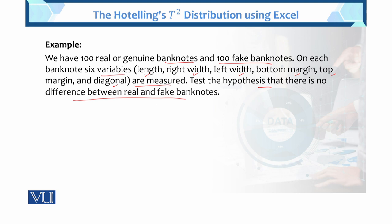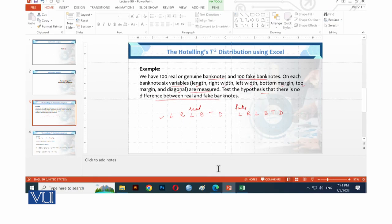The data has 100 real notes and 100 fake notes, totaling 201 rows including the header row. In the multivariate case, real notes form one group and fake notes the other. Each note is checked on six variables: length, right width, left width, bottom margin, top margin, and diagonal. This scenario calls for Hotelling T-square since we are comparing mean vectors across two groups.